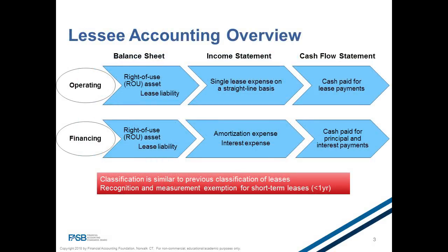The biggest change: leases of property and equipment that were reported as rent expense on the income statement and appeared nowhere on the balance sheet will now be on the balance sheet as lease-related assets and liabilities. These are called operating leases. Companies must identify all their leases, compute the present value of the lease payments, and determine the amounts to be recorded on the balance sheet. On the income statement, companies will continue to record rent expense for operating leases.